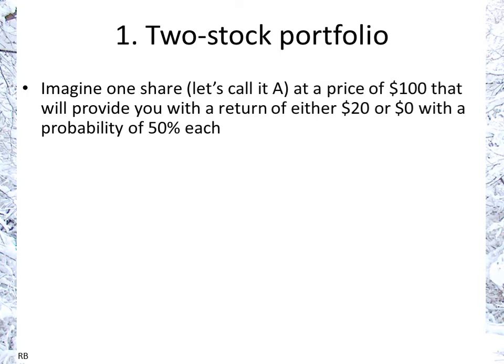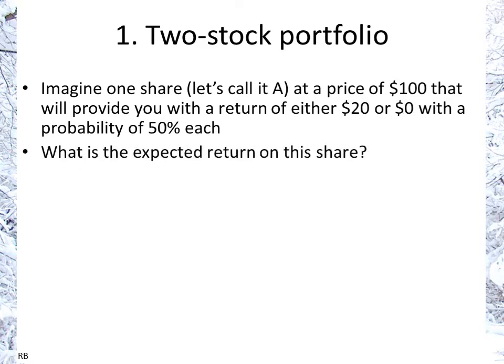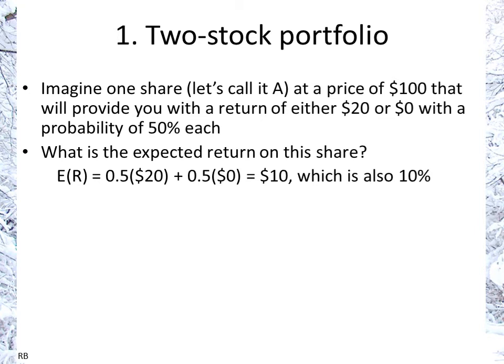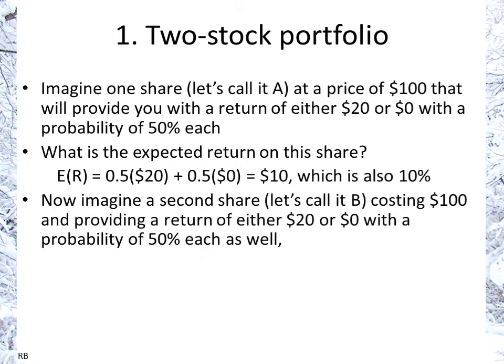Let's take a share and assume it has a price of $100 and it will provide a return of either $20 or $0 with a 50-50 probability. We can also calculate it as a percentage return — that would be 20% or 0%. The expected return would be the weighted average, which is $10 or 10%: half of 20% plus half of 0%.